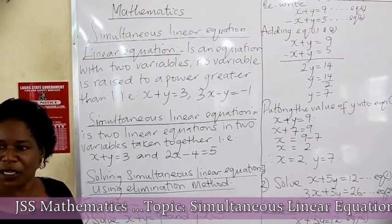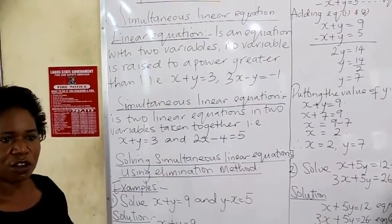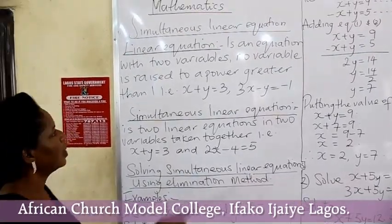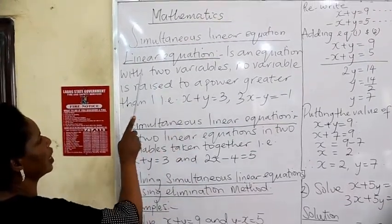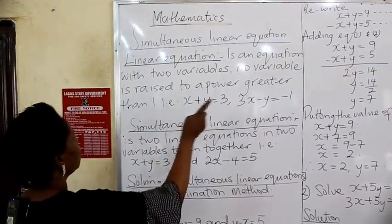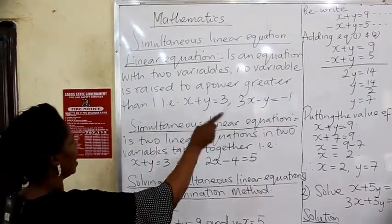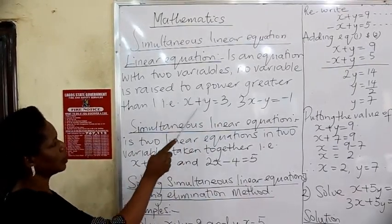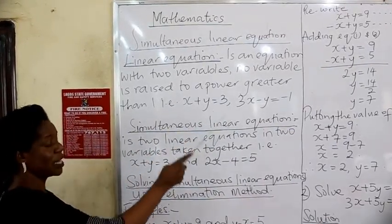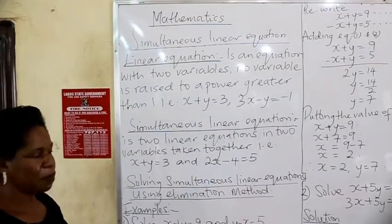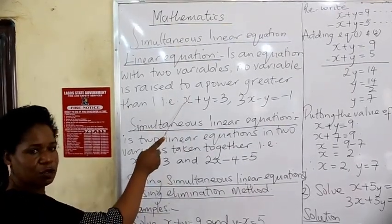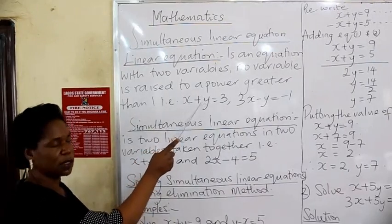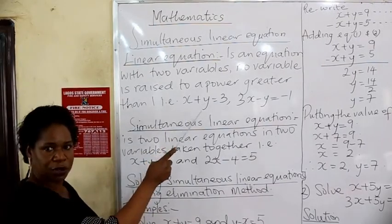How can we solve simultaneous linear equations using the elimination method? Before we start, what is a linear equation? A linear equation is an equation with two variables where no variable is raised to a power greater than one. For instance, if you have x plus y equal to 3, the power of x is raised to power 1 and the power of y is also raised to power 1. This is an example of a linear equation.